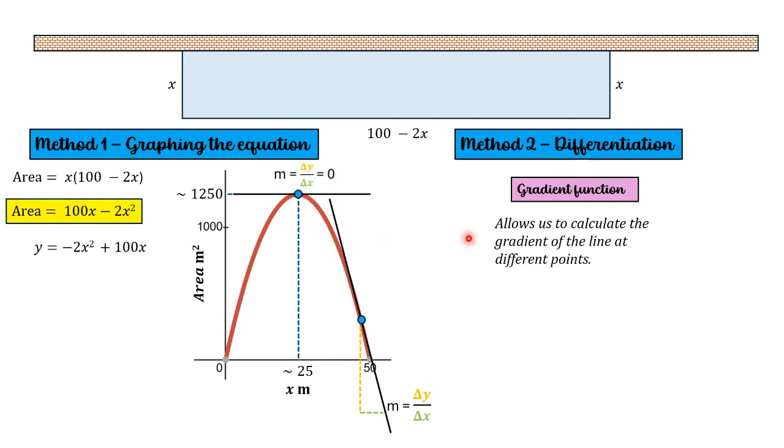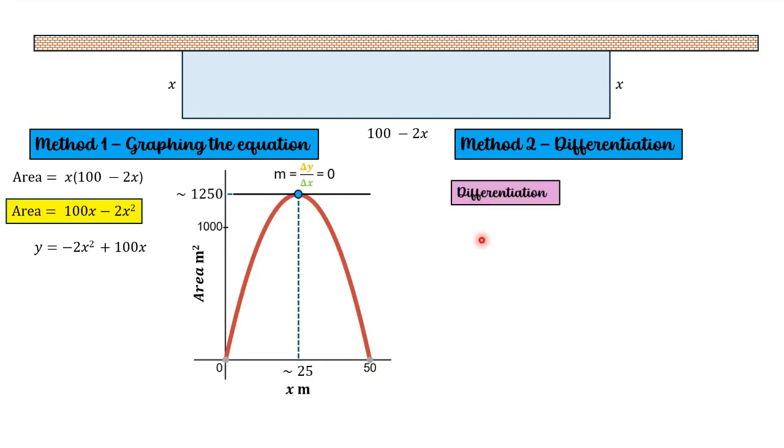Now the nice thing about gradient functions is that if you have a value for x, you can work out the gradient at that point. And if you know what the gradient is at any point, you can calculate the value for x. So that's what we're going to do now. So first things first, let's get the gradient function, and we do that through differentiation of the equation.